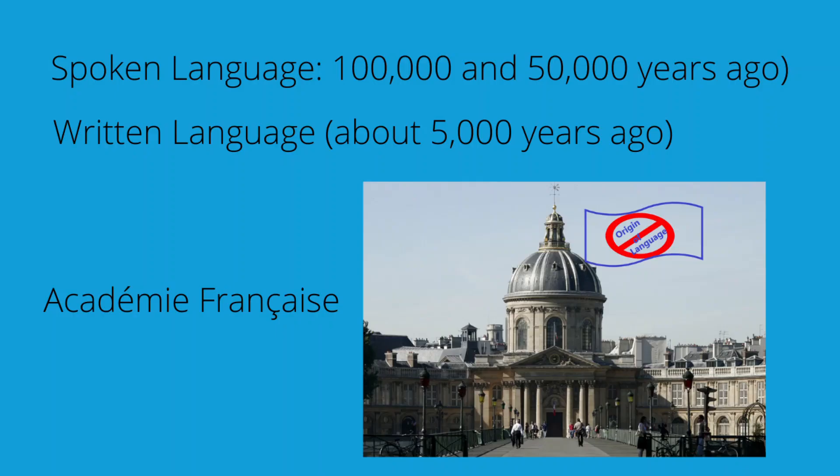We don't know how language originated, but we suspect that some type of spoken language must have developed between 100,000 and 50,000 years ago, well before written language, which was developed about 5,000 years ago.